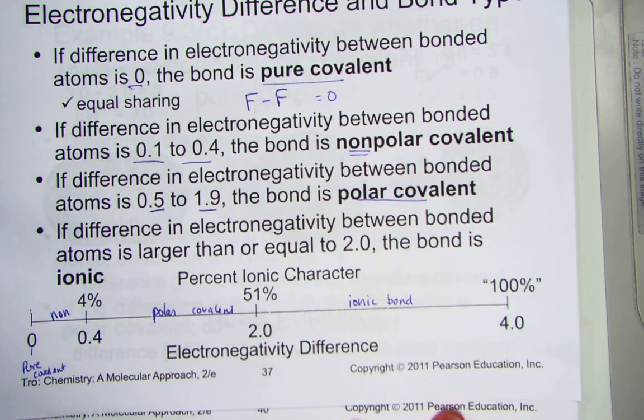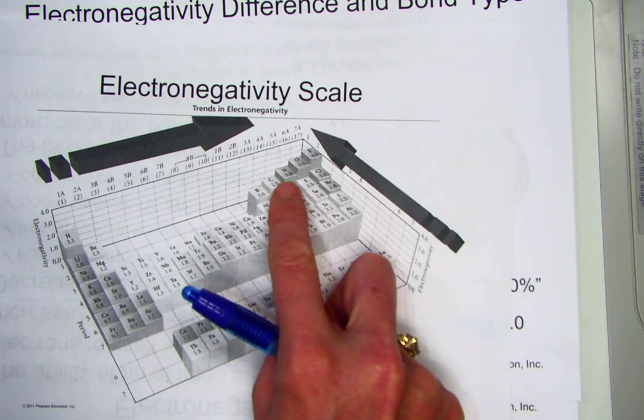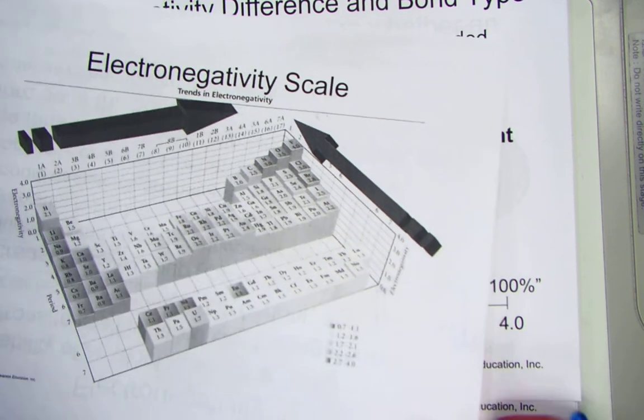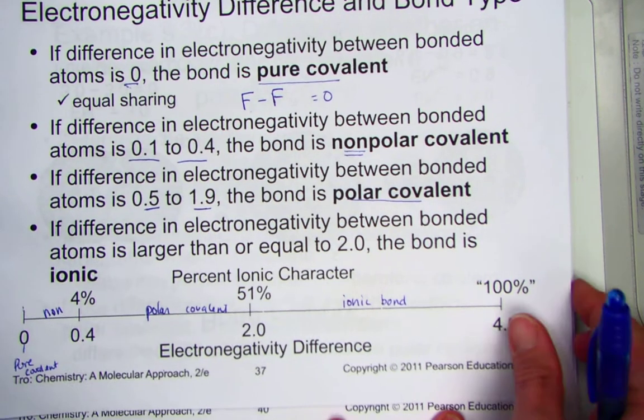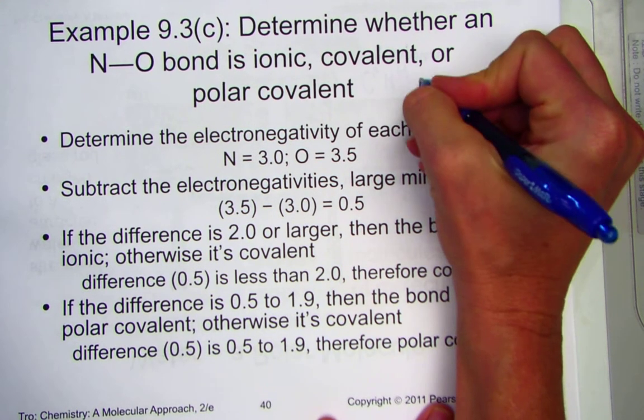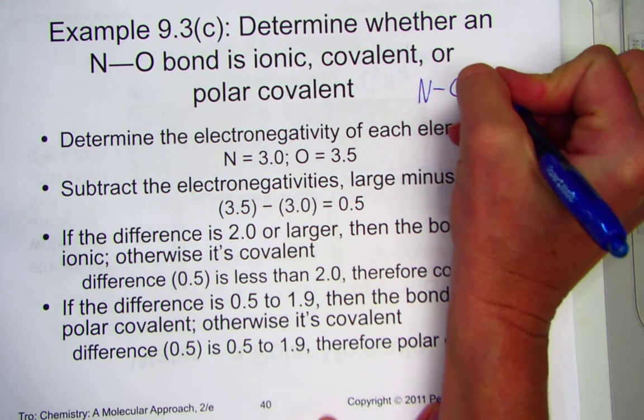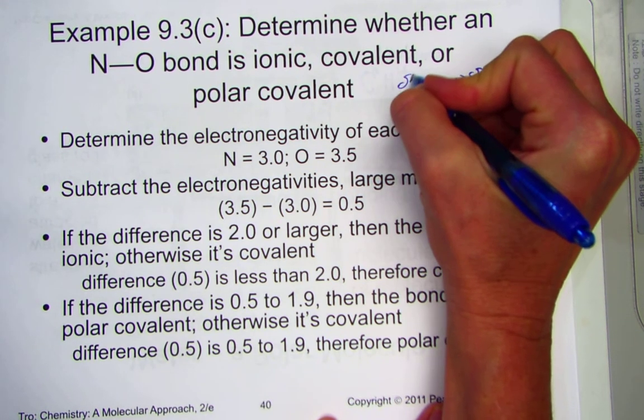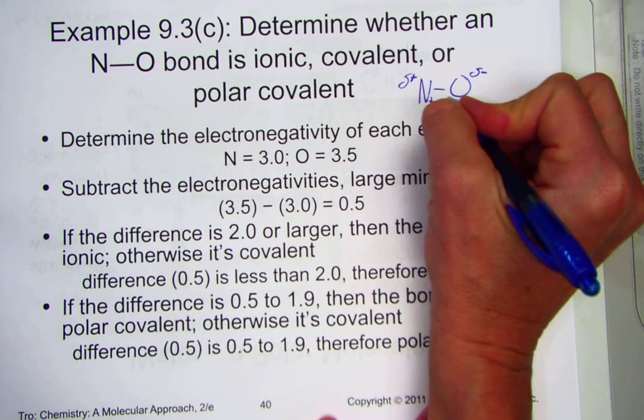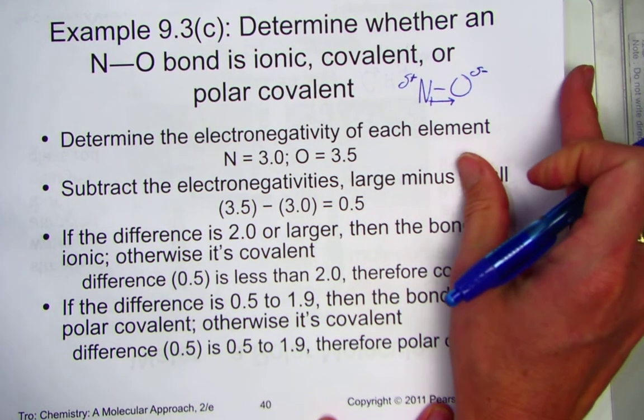The more electronegative element between nitrogen and oxygen is oxygen. Therefore, it would develop the more negative region. And so, we would think about that structure for NO, having the partial negative on oxygen and the partial positive on nitrogen. The electron pull towards the more electronegative element.